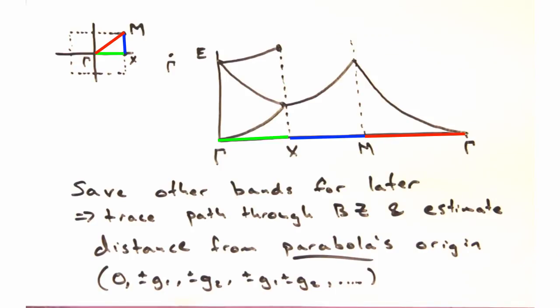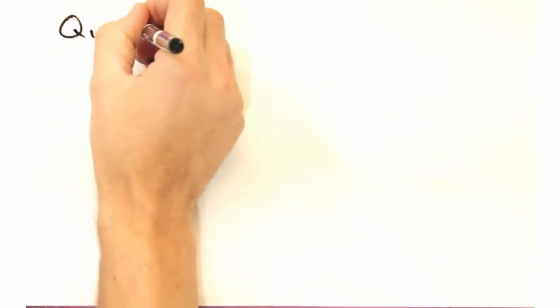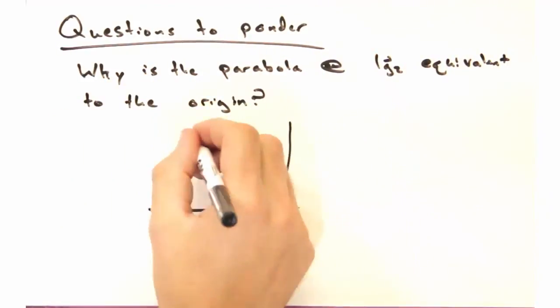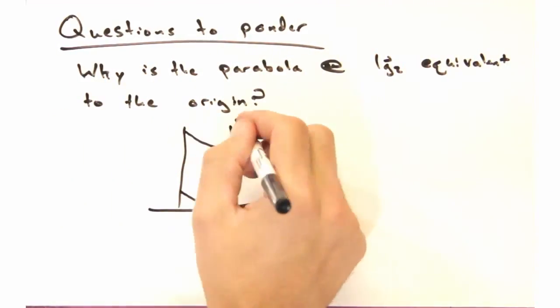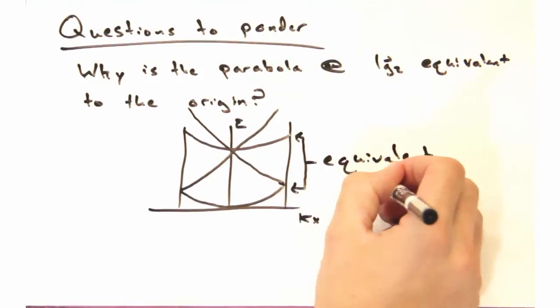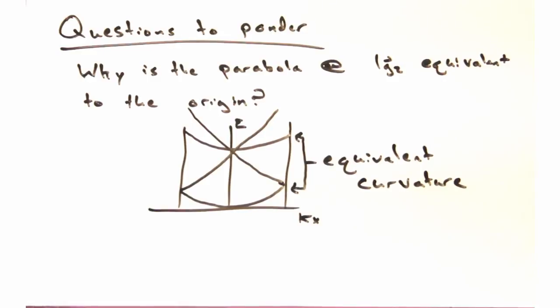And with that, we've wrapped up band structure diagrams. As a question to ponder, see if you can prove mathematically why the parabola shifted by 1G2 is equivalent to the parabola at the origin. And by equivalent, you mean it has the same curvature, although it's at a higher energy. Yeah. Okay.